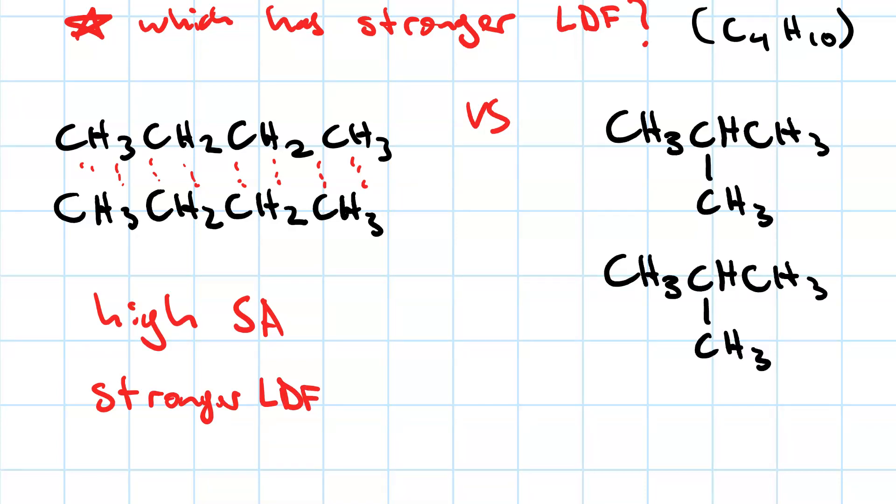If we bring the second compound in contact with another molecule of itself, no matter how they're arranged, there's going to be significantly less surface area in contact. So, this one will have lower SA and therefore weaker LDF. You'd expect the compound on the left to have a higher melting point and boiling point.